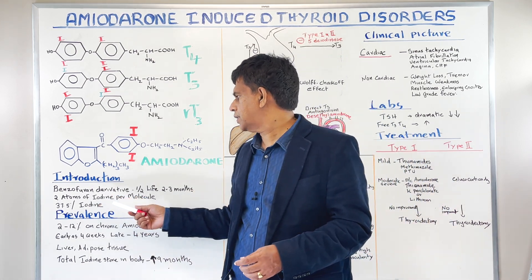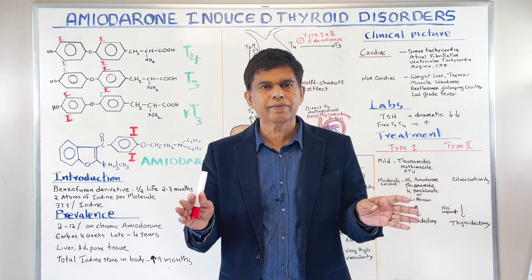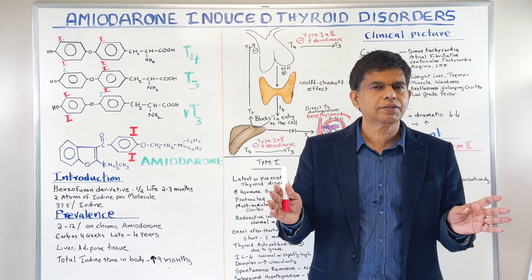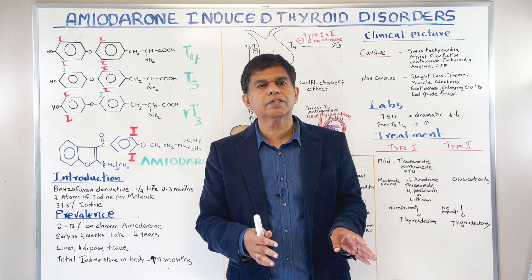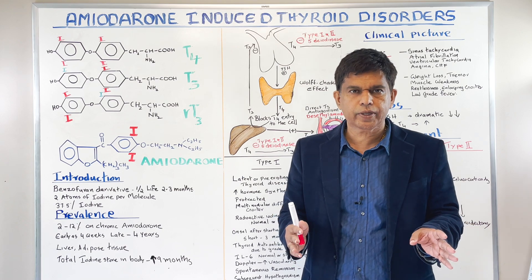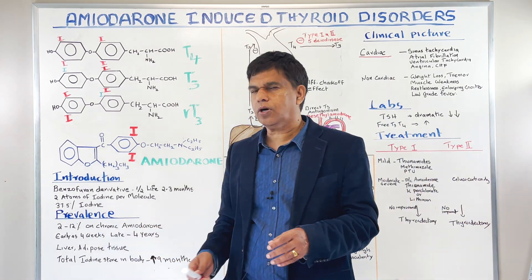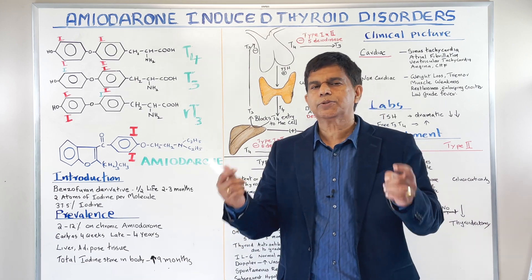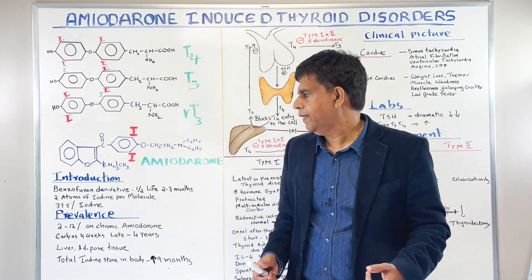Amiodarone is a benzoyl-furan derivative. Remember the half-life — have you ever seen a drug with such a long half-life? Three months. If you give it to the system, it's going to stay there for a long, long time. And 2 to 12% of chronic amiodarone therapy can have complications, especially in people in countries where there is iodine deficiency.